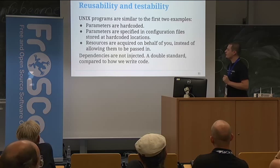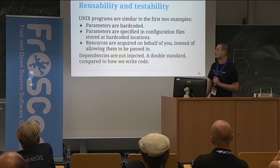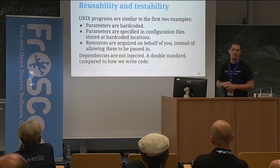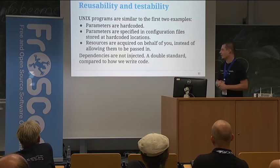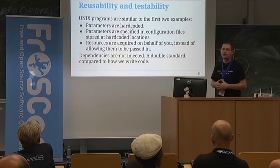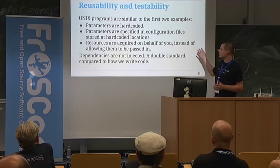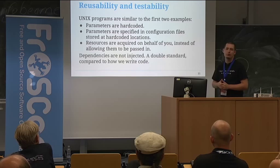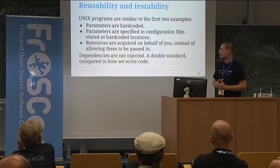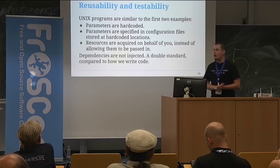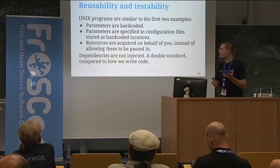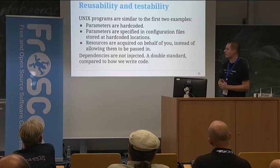The fun thing about Unix programs is that they're not written like the dependency injection example — they're really written like the first two examples. Either parameters are hard-coded so they make certain assumptions like 'I must open this filename on disk,' or the path of the configuration file is hard-coded. And even if they are truly parameterized, these programs still acquire the resources on behalf of you. You don't provide the network socket to the web server — you provide the port number it should listen on. This is a double standard in my opinion. We know what a badly written Java program is, but somehow we can't see that programs using the Unix mindset are also badly written in a certain way.